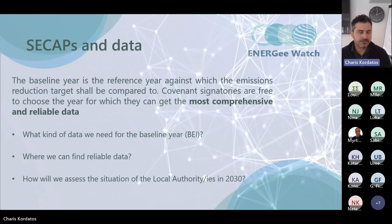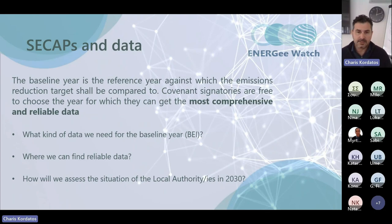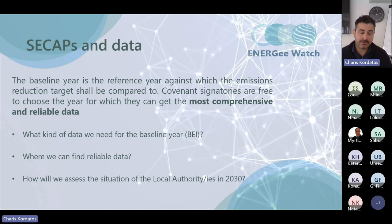We need to stress the importance of the baseline year, because it's something that we need to compare to the target years in 2030, 2040, and 2050. That's why we need to have accurate and reliable data when we are creating and developing our baseline emission inventory.